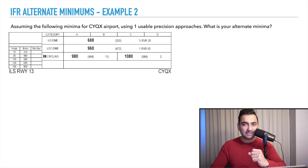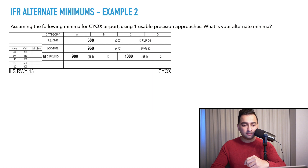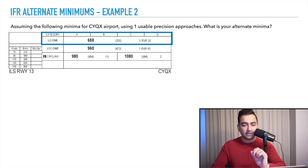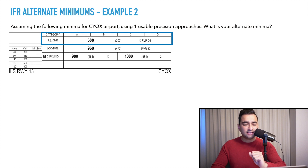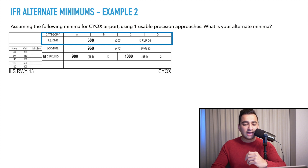Let's look at another example. Assuming the following minima for the Gander airport using one usable precision approach, what is your alternate minima? The precision approach is the ILS approach, and for all categories — Alpha, Bravo, Charlie, Delta — it's the same. On the left-hand side is 688 feet, which is above sea level. On the right-hand side, it's 200 feet above ground level, and the advisory visibility is half a statute mile, RVR 2600.